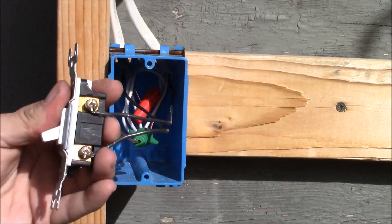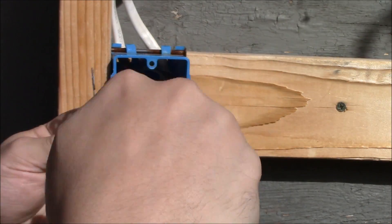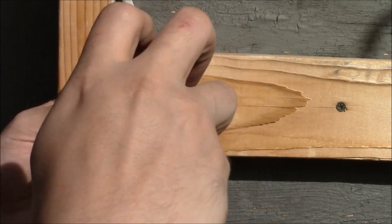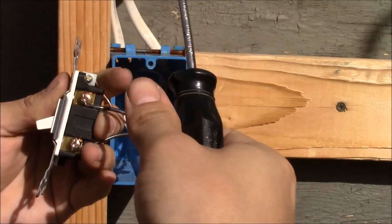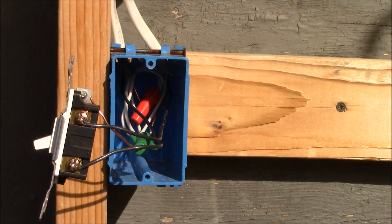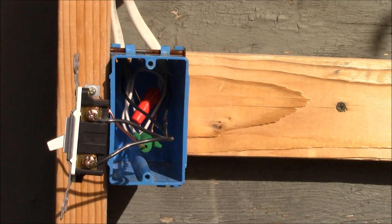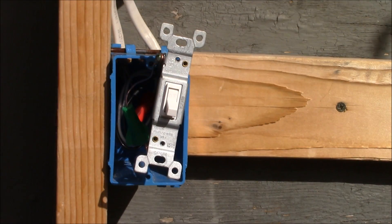Next we'll take the load wire, place it on the other bronze terminal, crimp it, and tighten it down securely. Now that we have all the wiring taken care of, it's time to attach the single pole switch to the switch box.